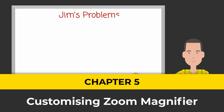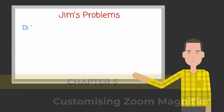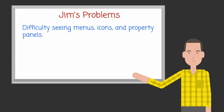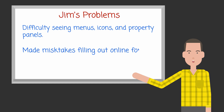So now let's remind ourselves of the problems that Jim was having. First, he had difficulty seeing the menus, icons and property panels on the screen. Then he nearly made a very expensive mistake with his online banking because he'd missed out a decimal point. And also when reading his bank statements, he struggled to stay on one line.